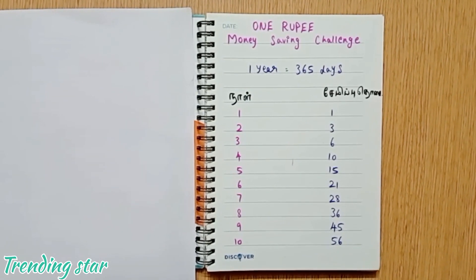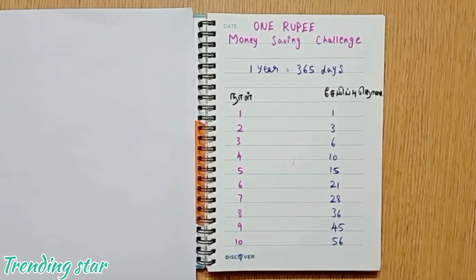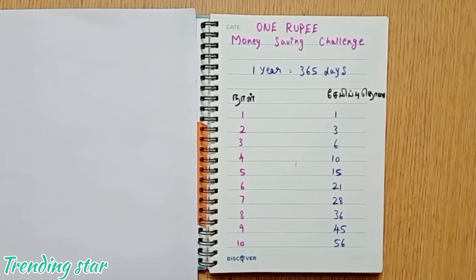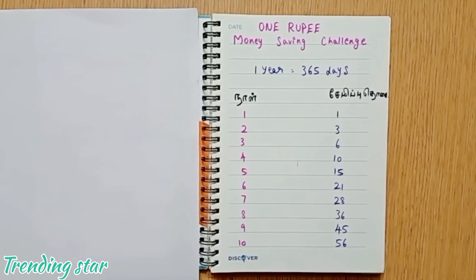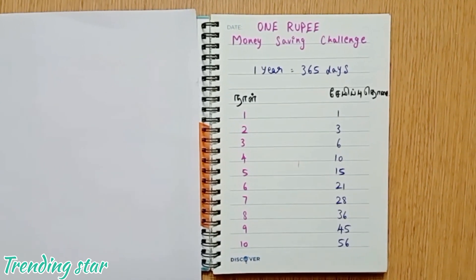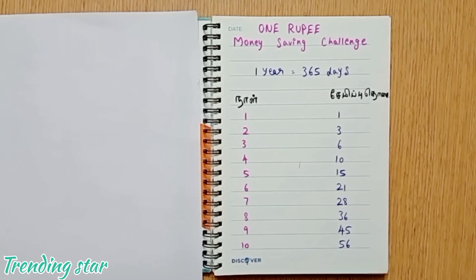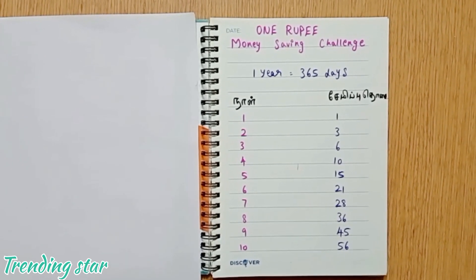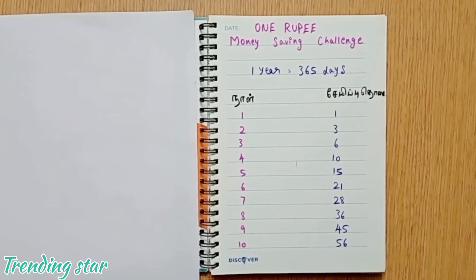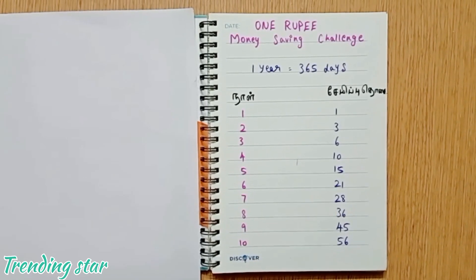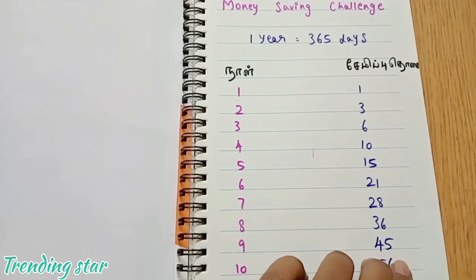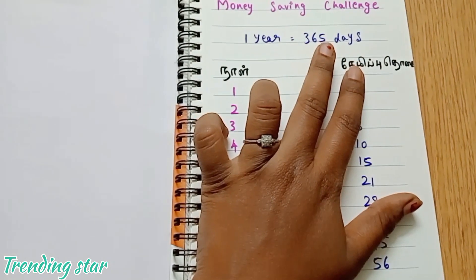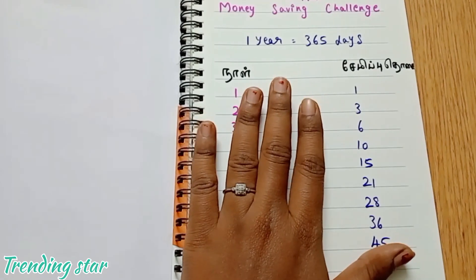Let's talk about how we can do this challenge, and how we can avoid common saving mistakes. Let's go to the video and talk about how we save in one month.